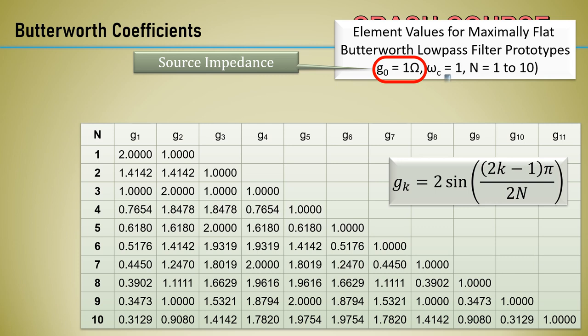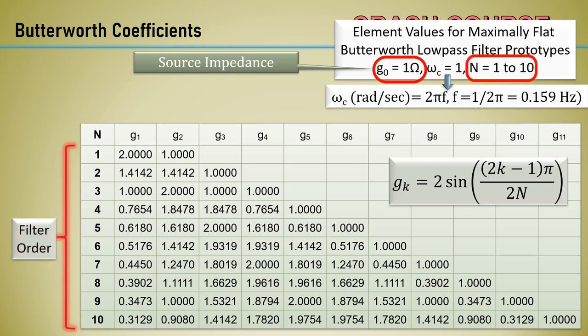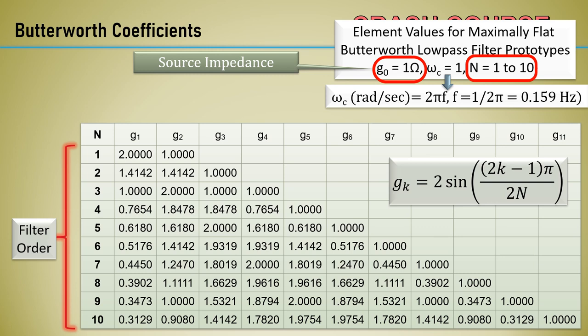The cutoff frequency, omega C, is normalized to radians per second, or 2 pi F, which is 0.159 Hz. The cutoff frequency is where the theoretical attenuation is 3 dB. The filter order, or number of elements, is the integer in the left column. The filter element coefficients are G sub n.